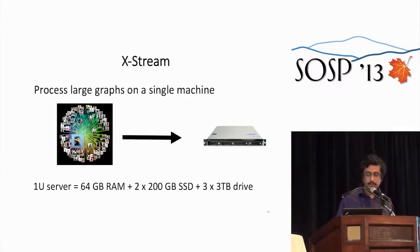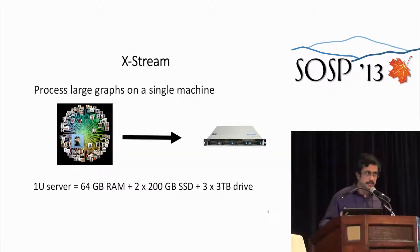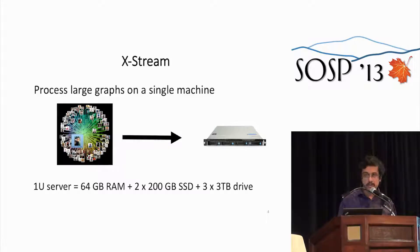X-Stream is a system that lets you process large graphs on a single machine. In our case, we did it on a 1U server. A 1U server can pack a lot of storage — the machine we have can accommodate 64 gigabytes of RAM, 400 gigabytes of SSD, and 9 terabytes of disk storage at a single instance.